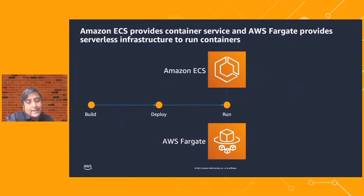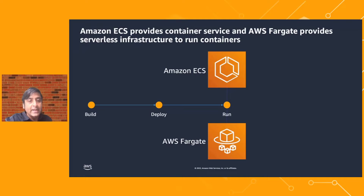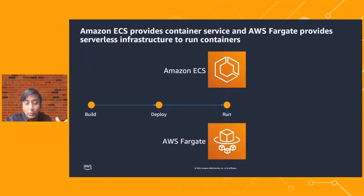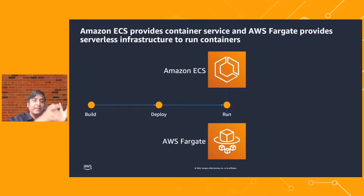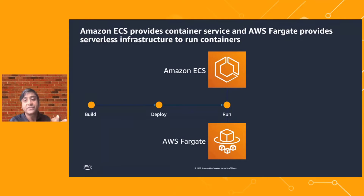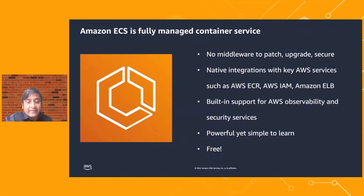One approach to building this modern digital assembly line is using Amazon ECS and AWS Fargate. Amazon ECS is a fully managed container service. AWS Fargate is a serverless compute engine for containers — by serverless, we mean you don't have to worry about maintaining any container host or container clusters. These two services address the needs of that core container service and container infrastructure, and they integrate with many other AWS services and third-party partner services to address CI/CD, observability, security, and cost efficiency.